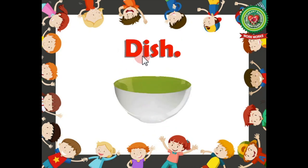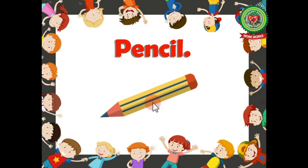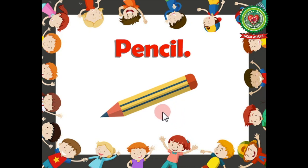Dish — d-i-s-h, dish — name of a thing, so noun. Book — b-o-o-k, book — name of a thing, so noun. Pencil — p-e-n-c-i-l, pencil — name of a thing, so noun. That means everything around us has a name.